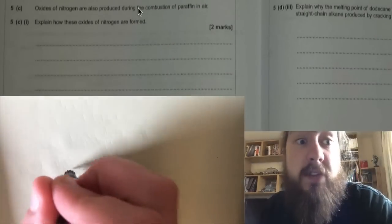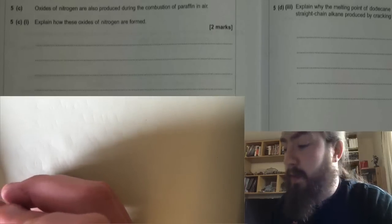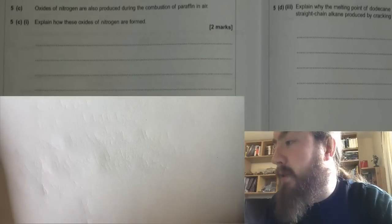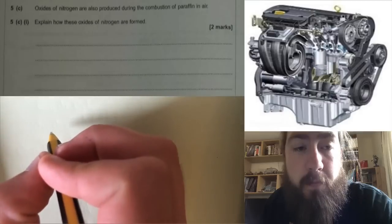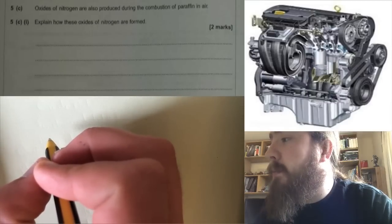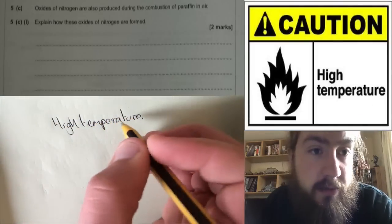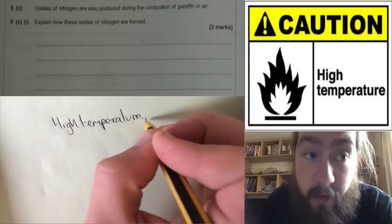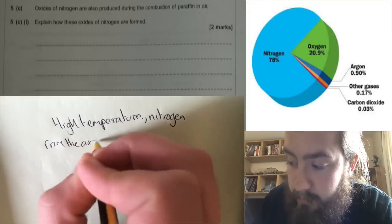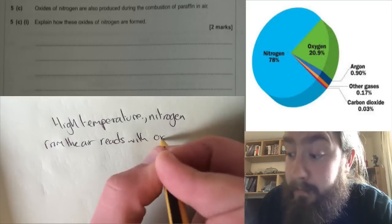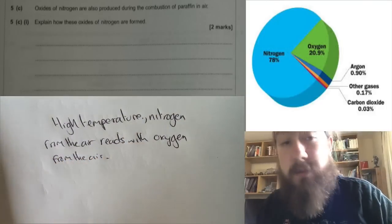5c. Oxides of nitrogen are also produced during the combustion of paraffin in air. Explain how these oxides of nitrogen are formed. When we're combusting a fuel, this will be the same as when we form oxides in a petrol engine. It's going to be because there's a high temperature, and that is causing the nitrogen from the air to react with oxygen from the air. It's important to know that the nitrogen does not come from the fuel itself, but from the air.